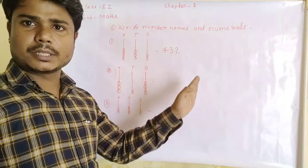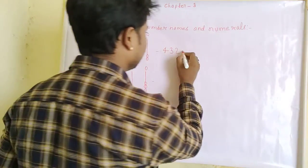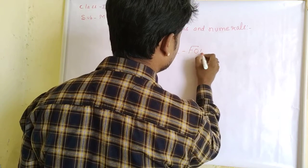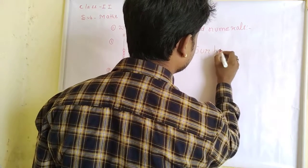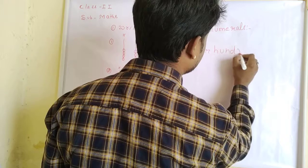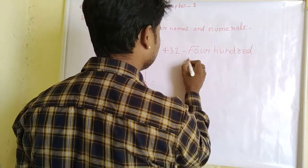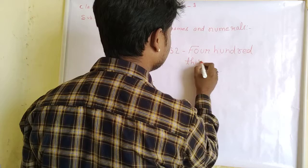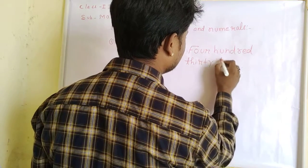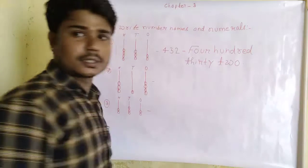Now we have to write number names also. So we can write here 432 — four hundred thirty-two. This is your first answer.